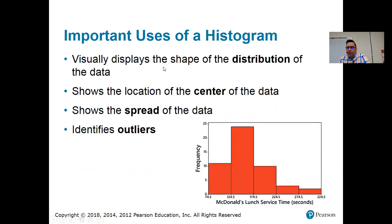Notice properties of a histogram. It does display the shape of the distribution. So, this one peaks in the 125 to 174 class and tapers off after 225. Shows the location of the center of the data. So, the center of the data is probably here. What I mean by center is sort of the halfway point through all the data.